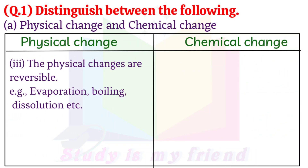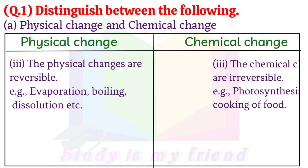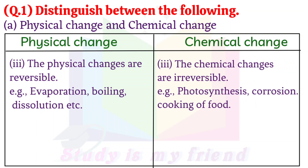Physical Change 3: The physical changes are reversible. For example: evaporation, boiling, dissolution. Chemical Change 3: The chemical changes are irreversible. For example: photosynthesis, corrosion, cooking of food.